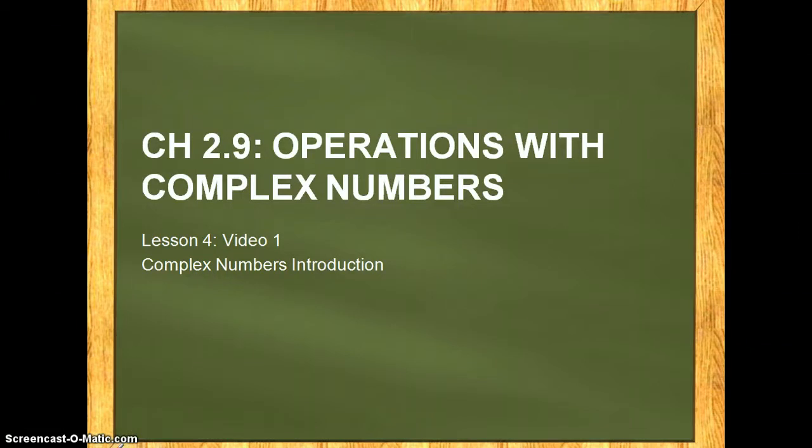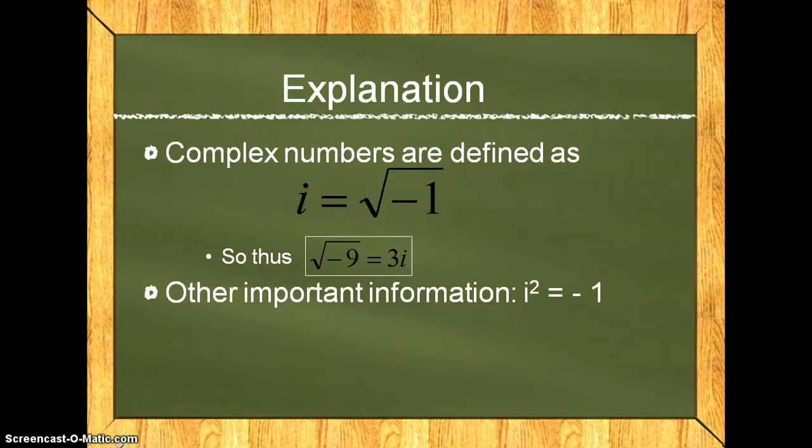This video does not have any U-tries, it's just informative. Complex numbers are defined as i equals the square root of negative 1. This is pretty much everything you need to know: i equals the square root of negative 1.